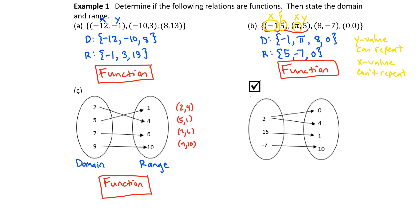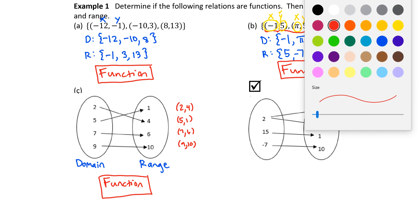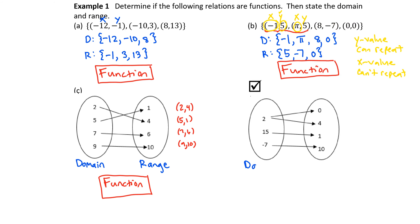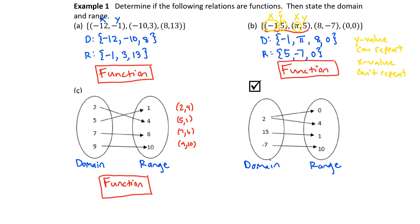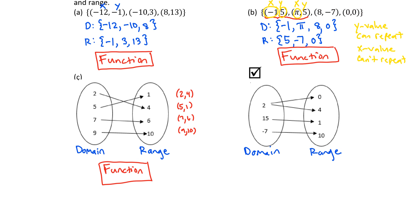The last example is another mapping. The domain contains the values in the first set: 2, 15, and negative 7. And the range contains the values in the second set: 0, 4, 1, and 10. Is this a function? What do you think? Did you say no?